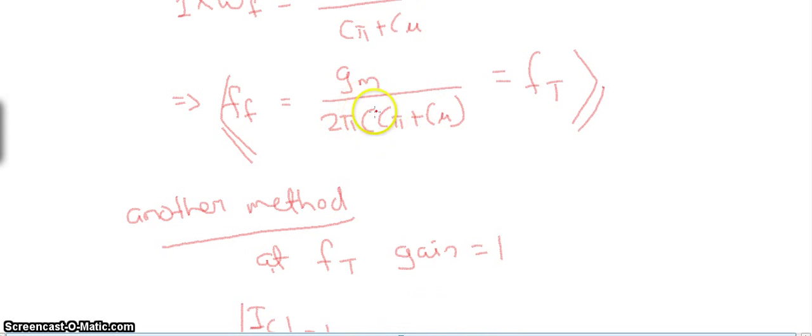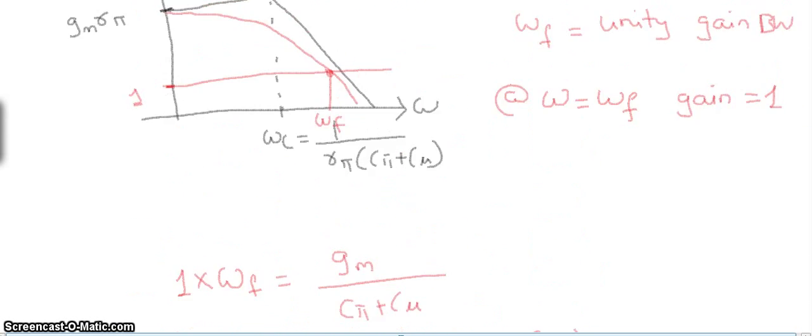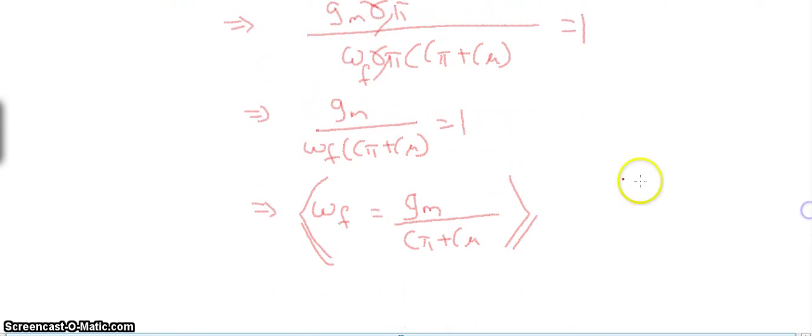Please try to solve it using the gain–bandwidth product — the results are exactly the same. This concludes the high frequency analysis of the BJT. Thank you.